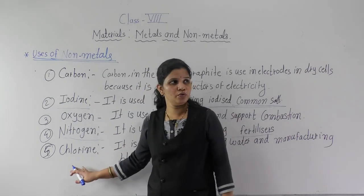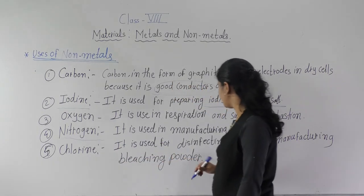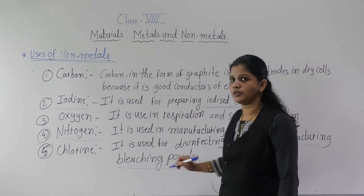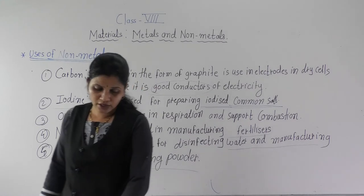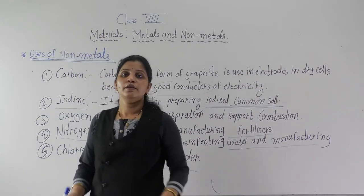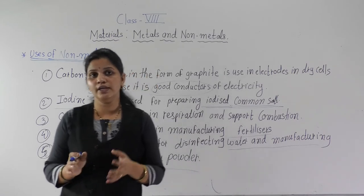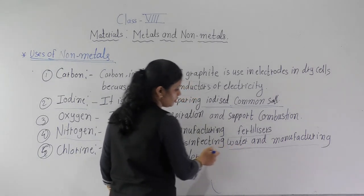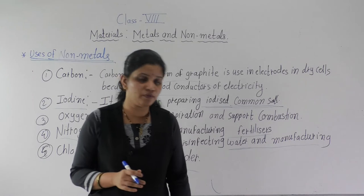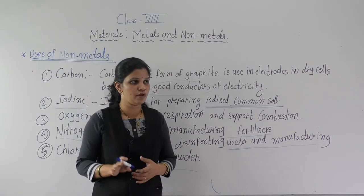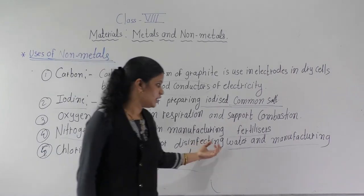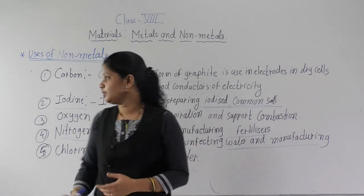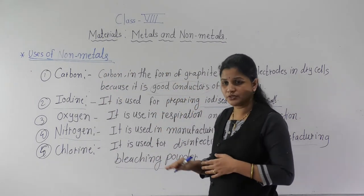The next non-metal is chlorine. Chlorine is used for disinfecting water and manufacturing bleaching powder. In villages, they provide chlorine water in any season because chlorine is used to kill germs and make water safe. Chlorine tablets are also available for this purpose. So these are some common uses of non-metals.